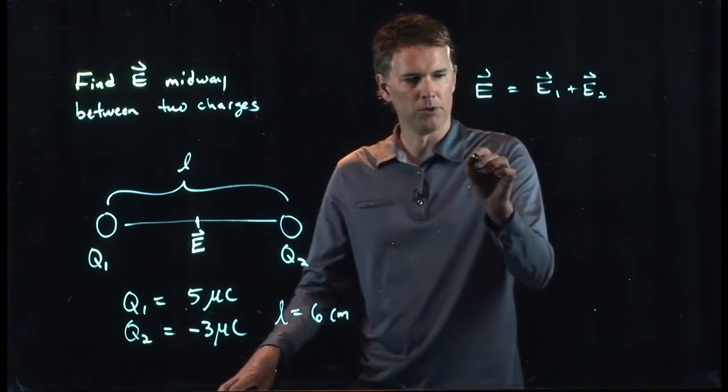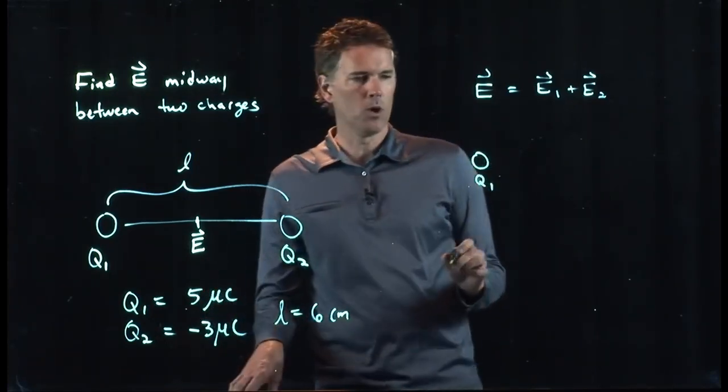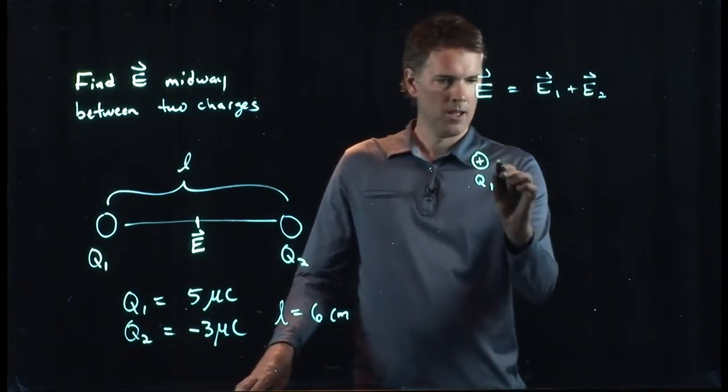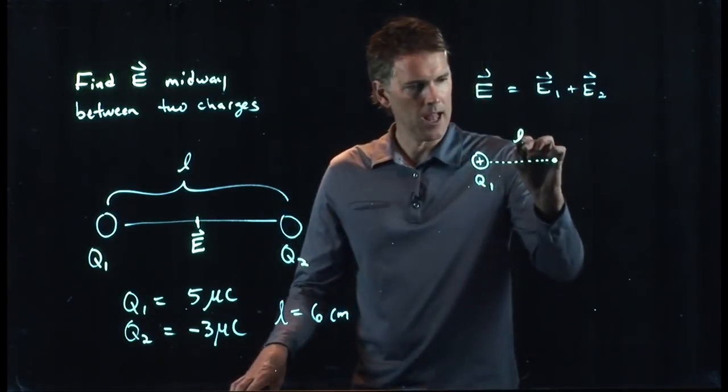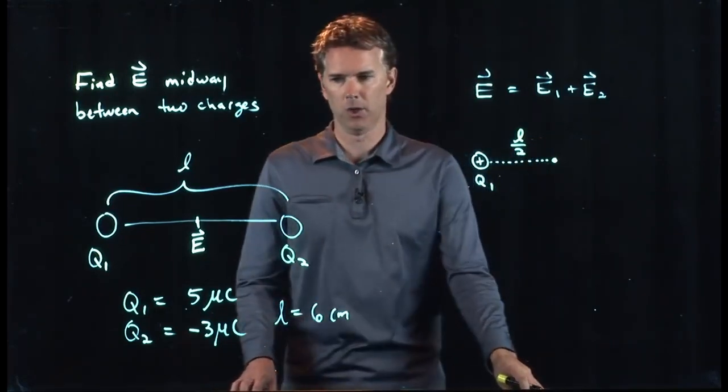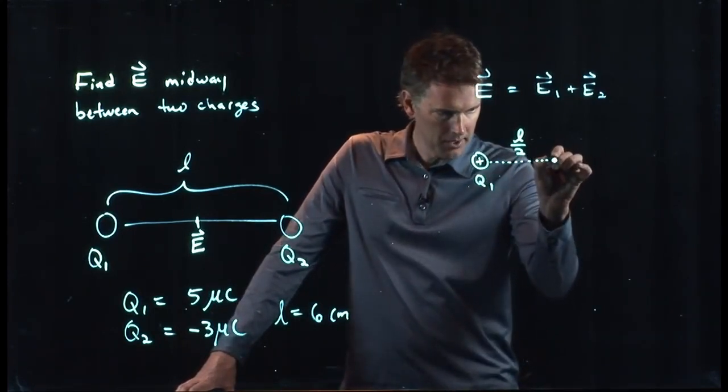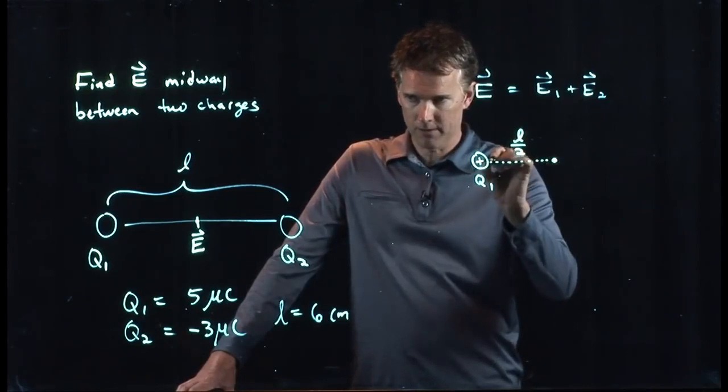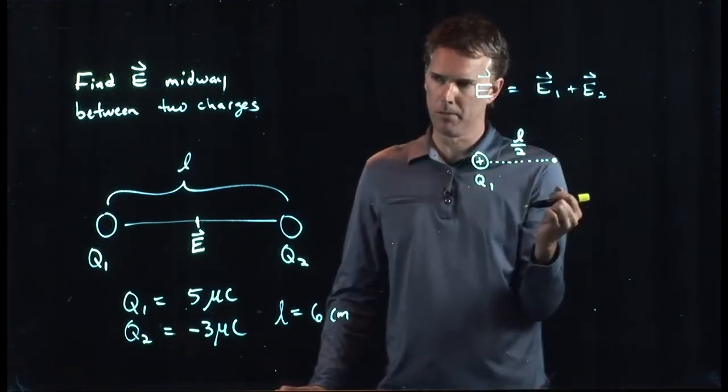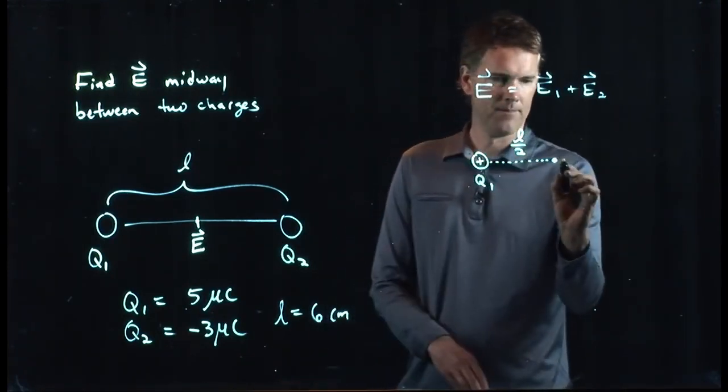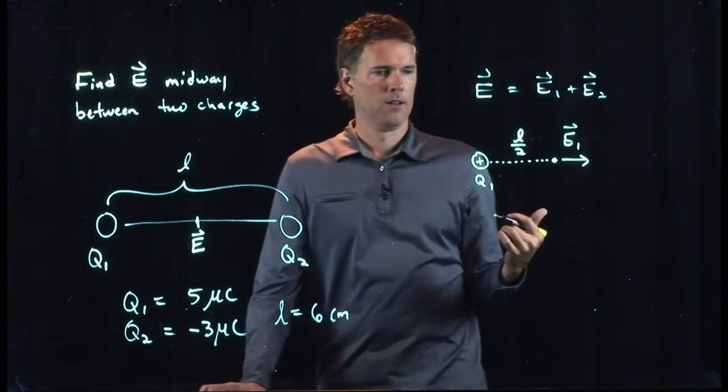So let's do two different problems. We'll do Q1 and we know that Q1 is a positive charge and our point is sitting right there a distance L over 2 away from Q1. Q1 is positive charge. Is the E field here pointing to the left or to the right? Is it pointing towards the positive charge or away from the positive charge? Away. E1 is pointing to the right. Perfect.